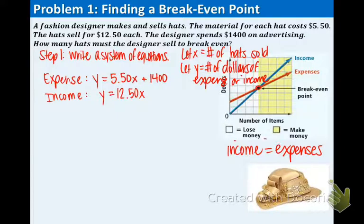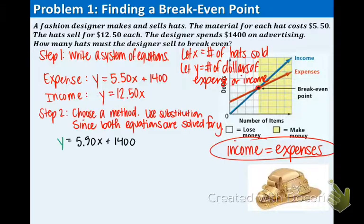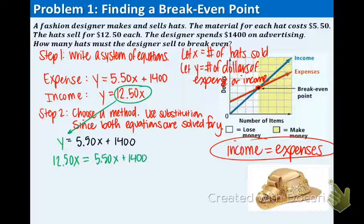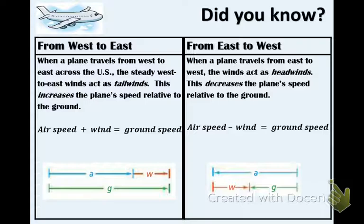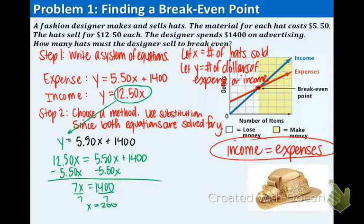Now, as I told you a little bit ago, the break even point is where the income equals the expenses. So we're going to use our substitution method and set them equal to each other. We are using substitution because both equations are already solved for y. So we're going to substitute in $12.50x for the y in the first equation. That means we're going to have $12.50x equal to $5.50x plus $1,400. We're going to combine like terms, bringing over the $5.50x using subtraction. That leaves us with 7x equals $1,400. Divide by 7 on both sides and you get x equals 200. Since x is the number of hats, the designer must sell 200 hats to break even.